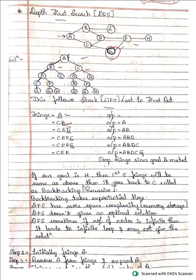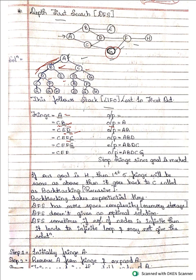B has children D and E. So first push E and then push D. Already C was there; now in place of B, its children E and D are coming. Last in first out — the last element inserted is D. Now D's children are C and F, so first push F and then push C.